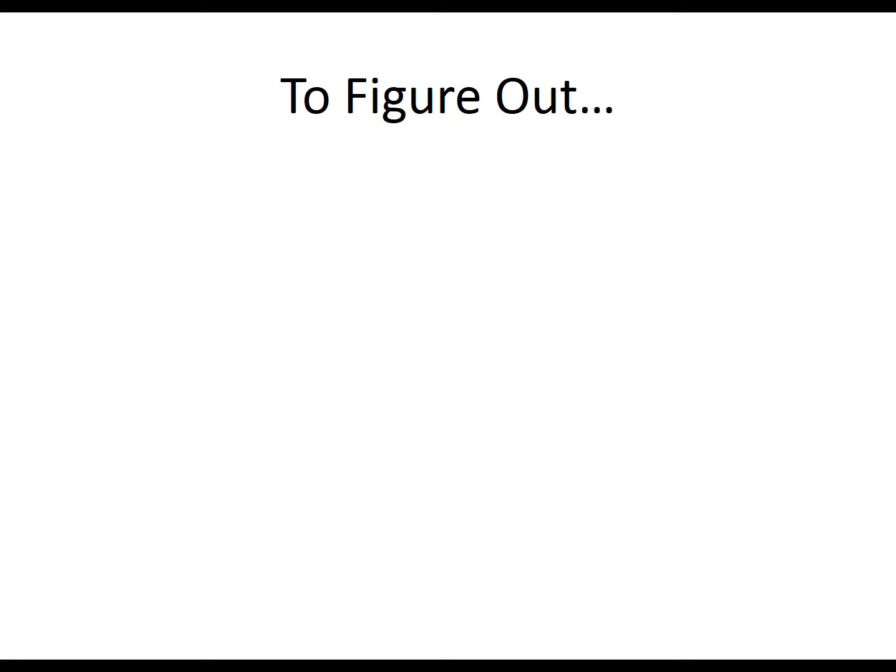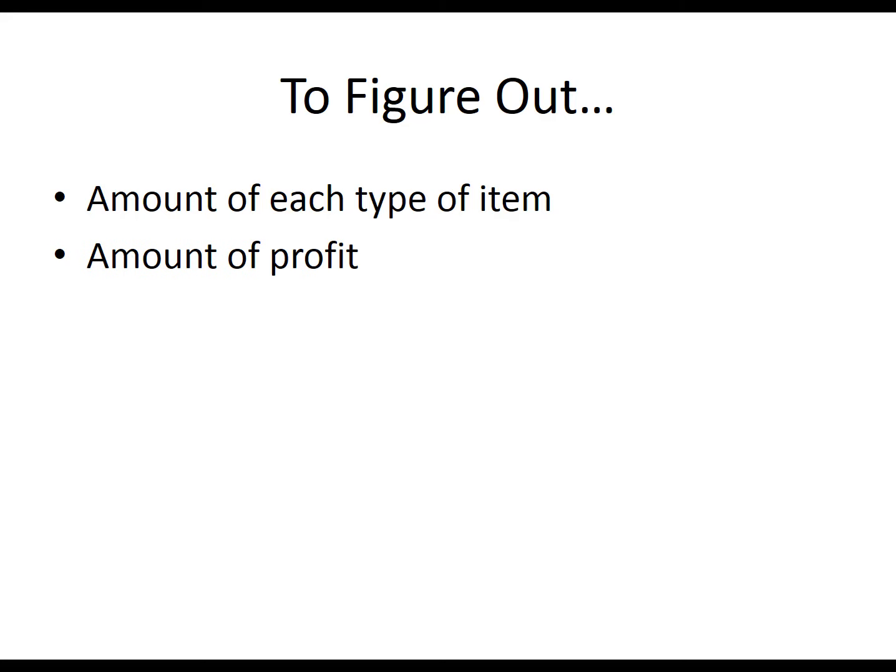When we apply linear programming to solve a product mix problem, we are actually trying to figure out the following. The first and foremost thing we're trying to figure out is the amount of each type of product or item that we want to make or buy, because it is not always feasible to make everything all by yourself. We are also trying to figure out the amount of profit or revenue that we will earn if we make and sell those products. And finally, we are also trying to figure out the amount of each resource that we will use, including the labor hours, to produce those products.